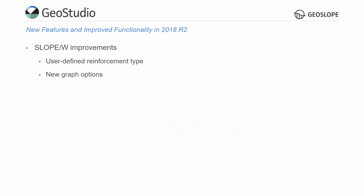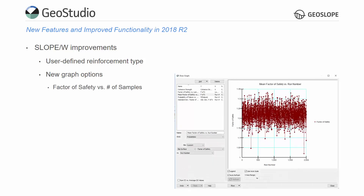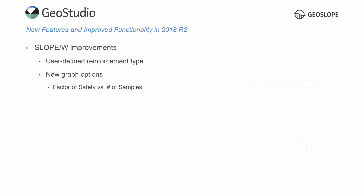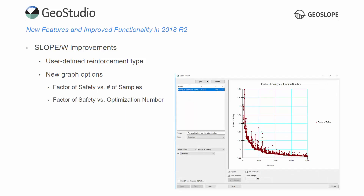Additional graphing options are now available in SlopeW for analyses including slip surface optimization or probabilistic analyses. Plots of the factor of safety versus the number of samples and the factor of safety versus optimization number are found in the draw graph dialog in results view.